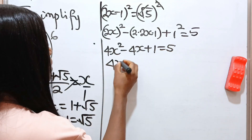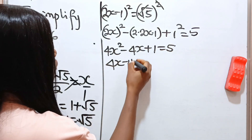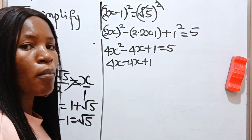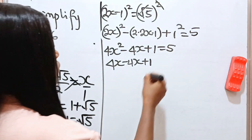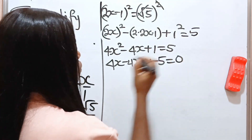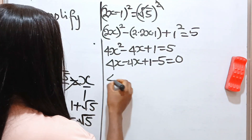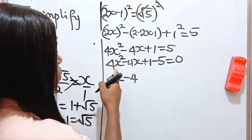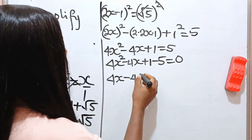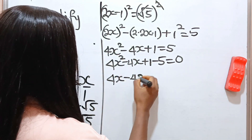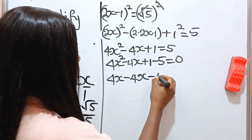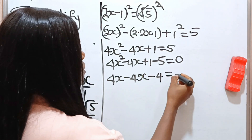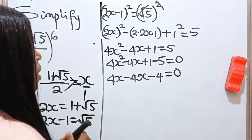So we have 4x² minus 4x plus 1. This 5 crosses over to become minus 5, so minus 5 equals 0. We have 4x² minus 4x, and 1 minus 5 is minus 4, so the equation is 4x² minus 4x minus 4 equals 0.